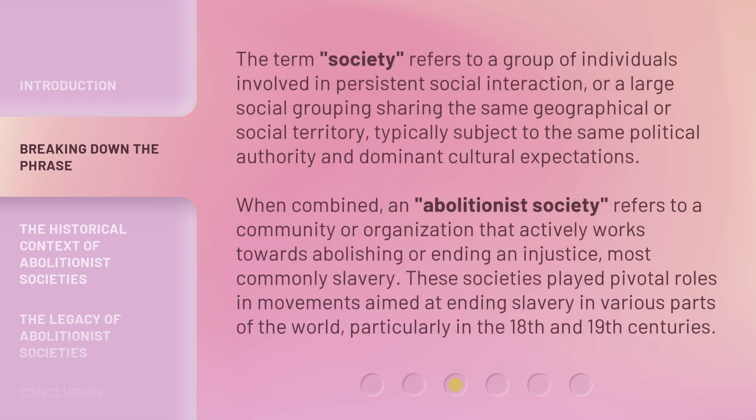The term Society refers to a group of individuals involved in persistent social interaction, or a large social grouping sharing the same geographical or social territory, typically subject to the same political authority and dominant cultural expectations. When combined, an Abolitionist Society refers to a community or organization that actively works towards abolishing or ending an injustice, most commonly slavery.